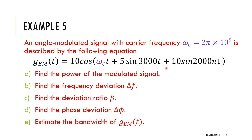You can pause the video and try to solve it yourself. The power is independent of the message; it equals amplitude squared over 2, giving 10²/2 = 50 W. To find the frequency deviation, recall that instantaneous frequency is the derivative of the phase angle, so we differentiate the angle expression.